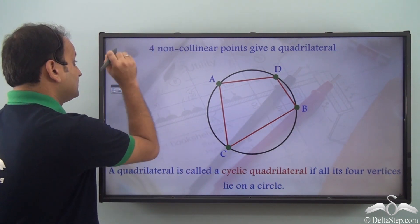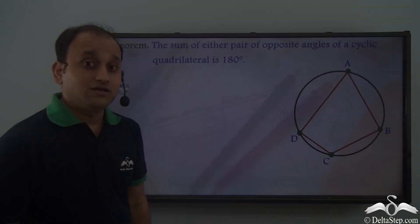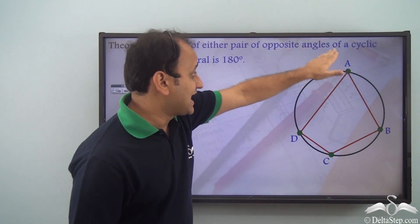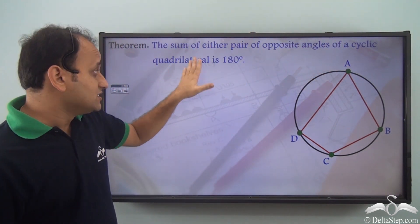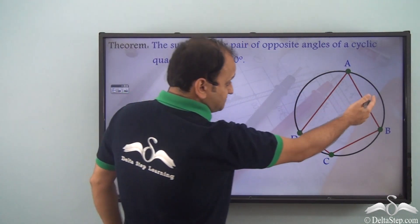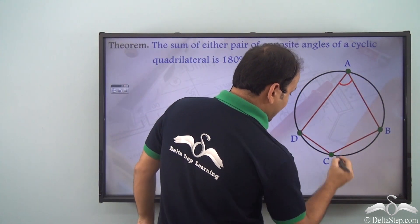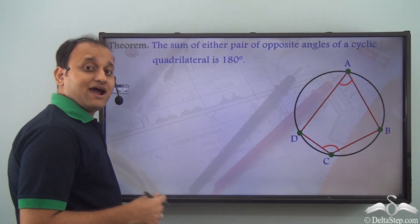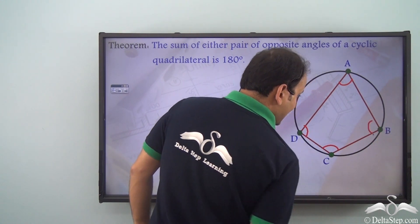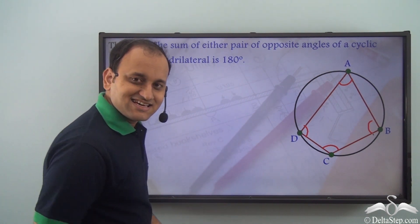Now, there is a very important theorem related to cyclic quadrilaterals. The theorem states that the sum of either pair of opposite angles of a cyclic quadrilateral is 180 degrees. So, if we talk about this particular cyclic quadrilateral, then the sum of this angle and this angle will be 180 degrees. Similarly, the sum of this and this opposite pair of angles will also be 180 degrees.